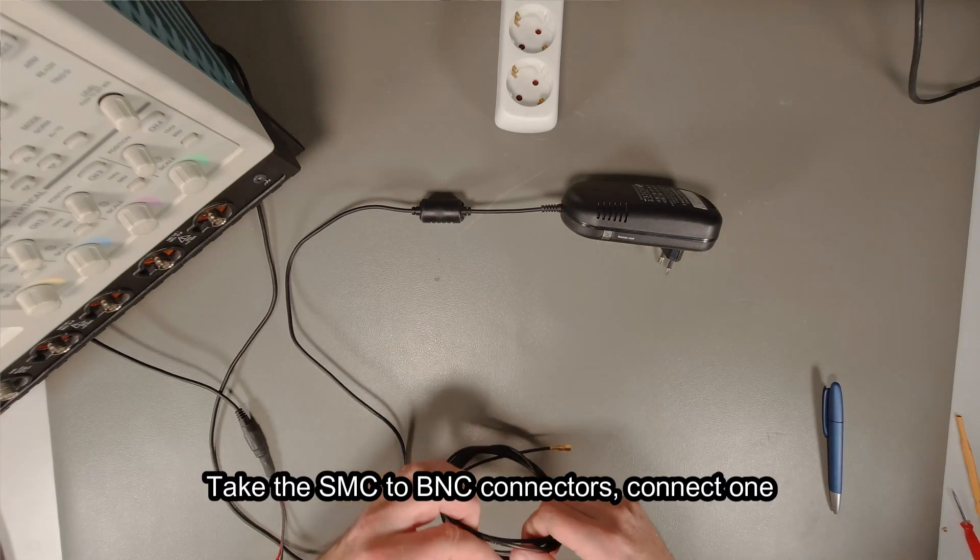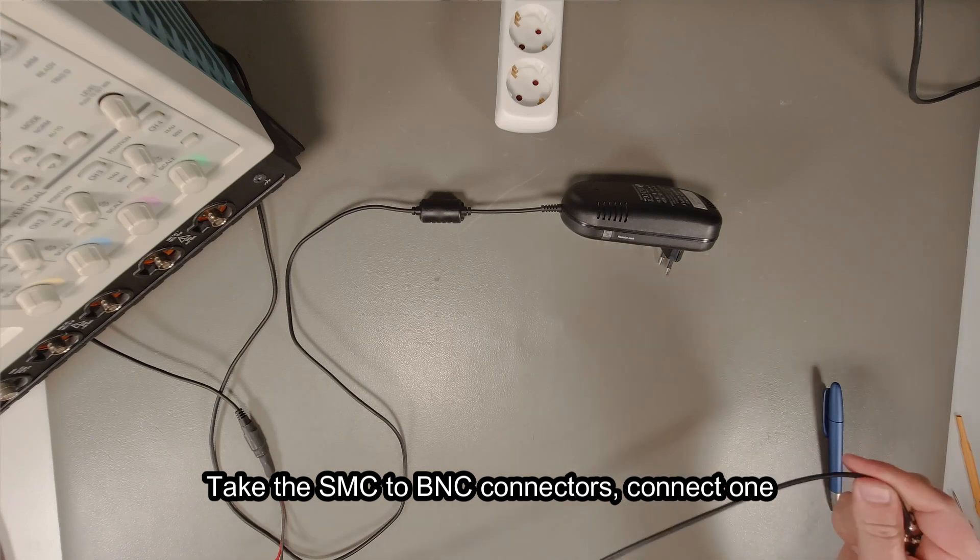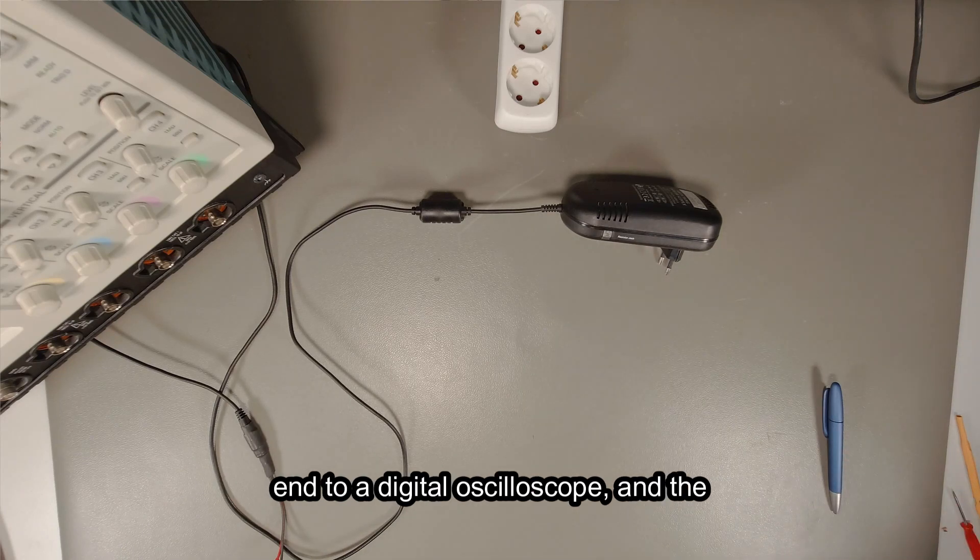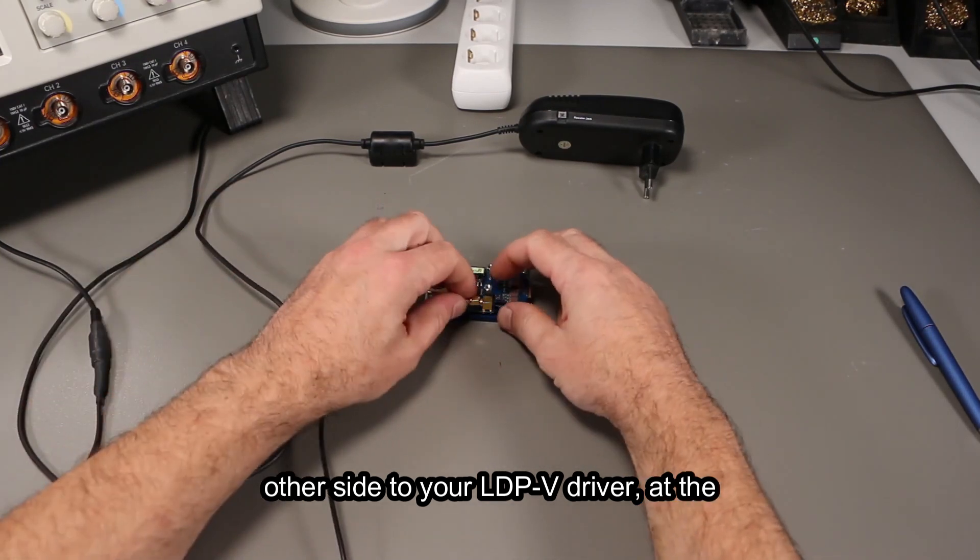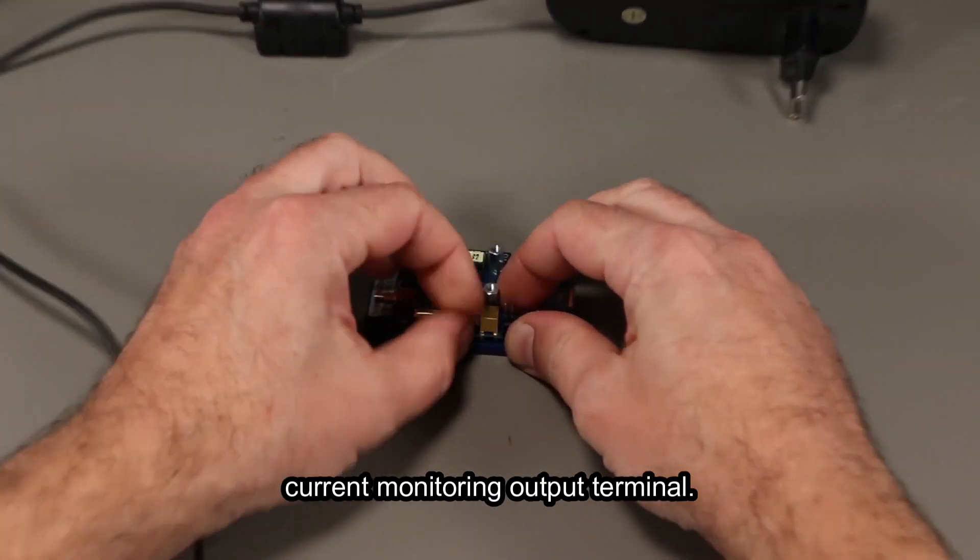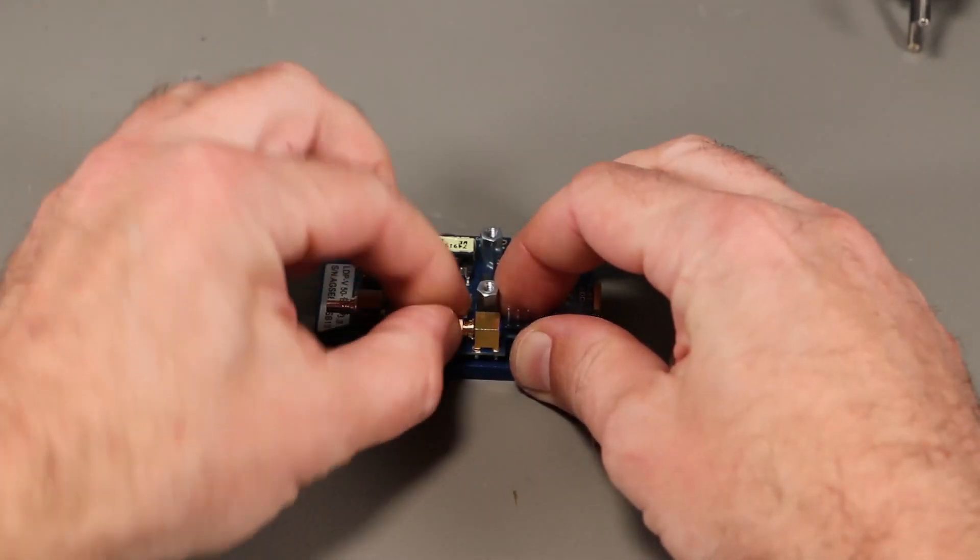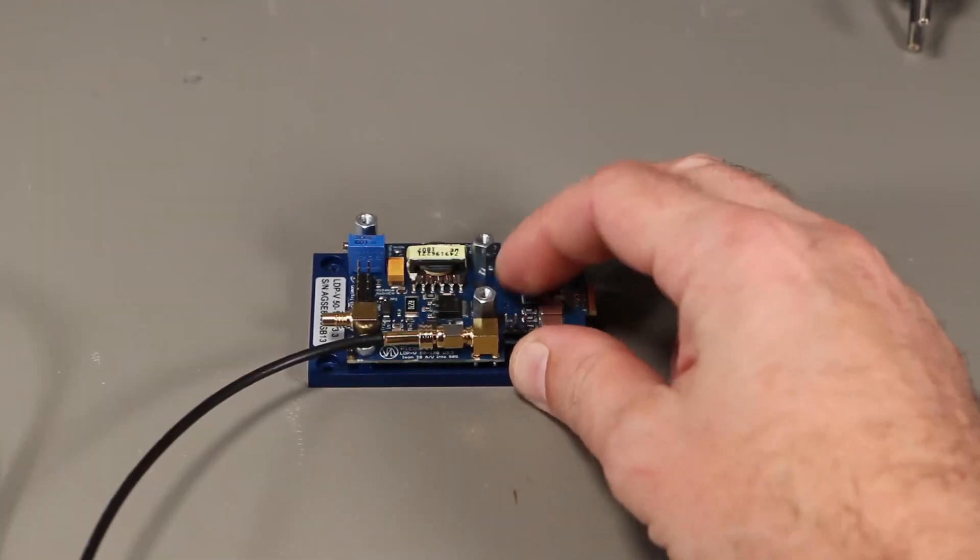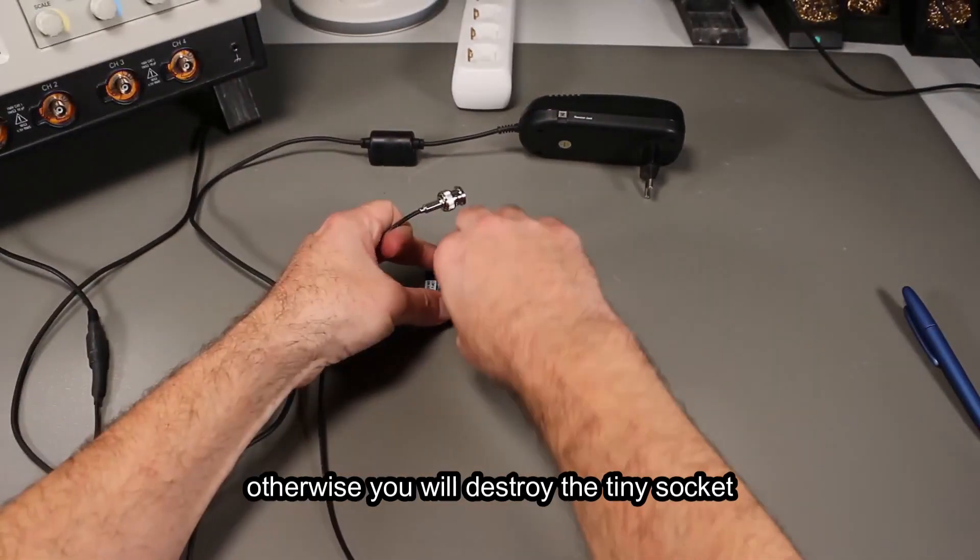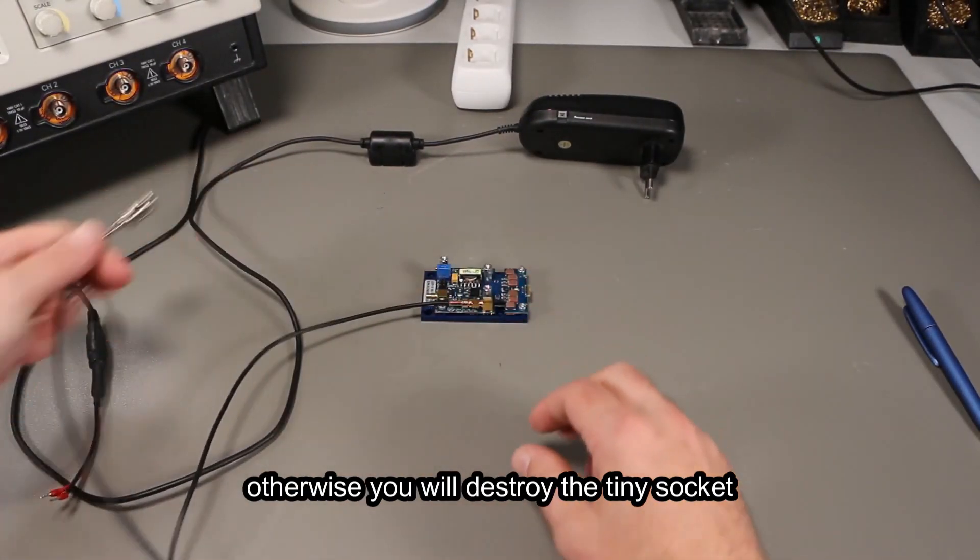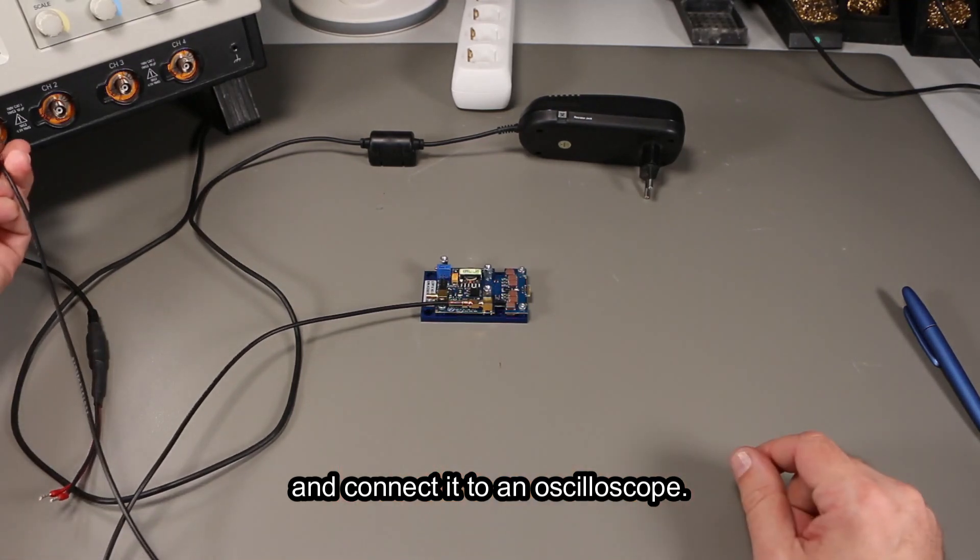Take the SMC to BNC connectors, connect one end to a digital oscilloscope and the other side to your LDPV driver at the current monitoring output terminal. Just tighten it a bit, not too tight, otherwise you will destroy the tiny socket.